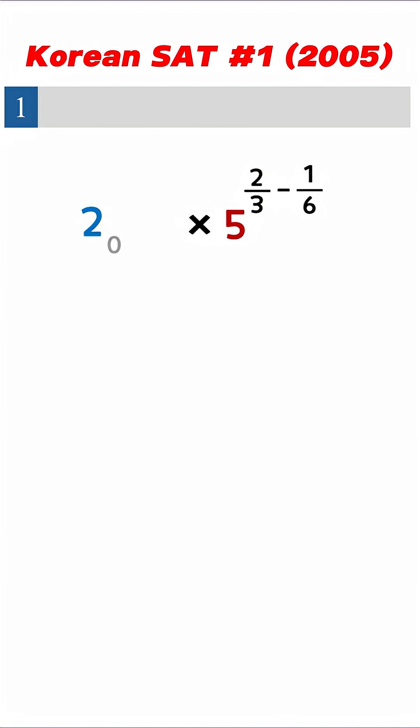2 over 3 minus 2 over 3 is 0, right? And then, anything to the power of 0 becomes 1.